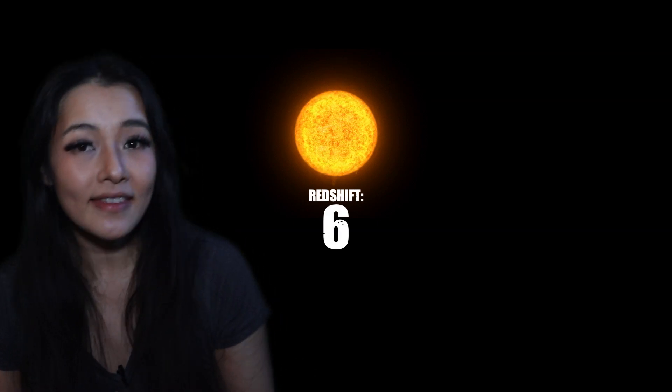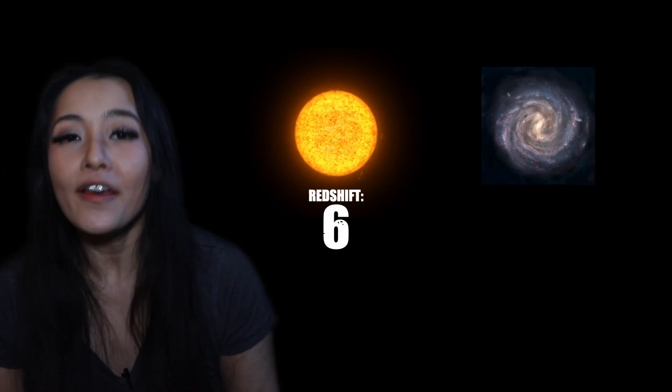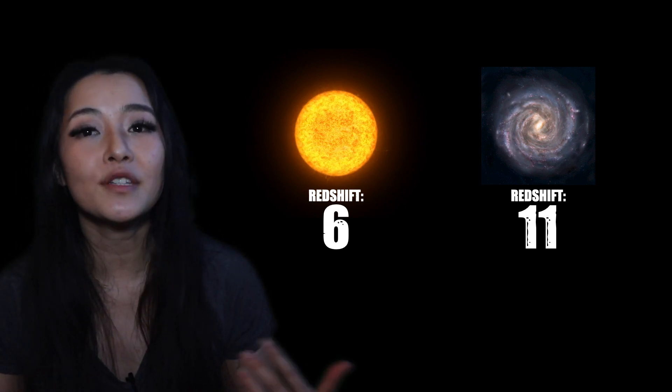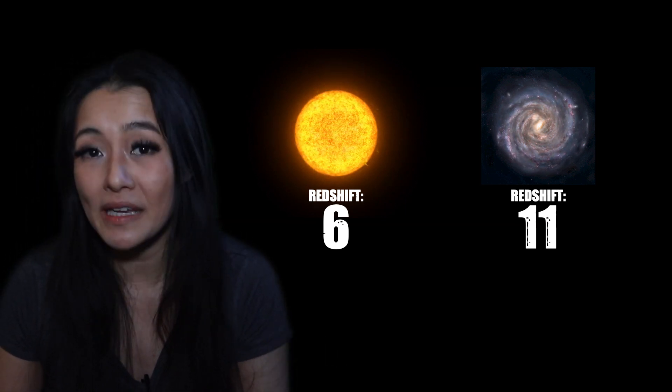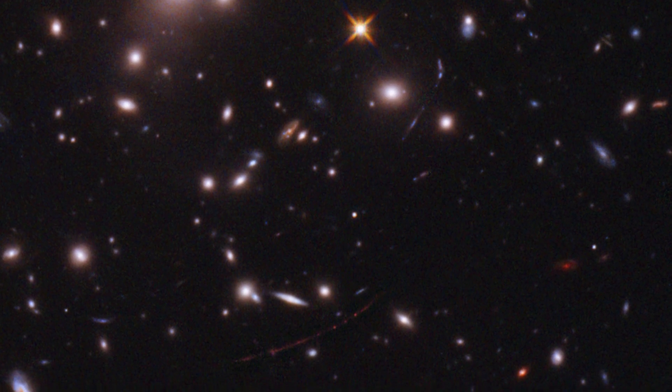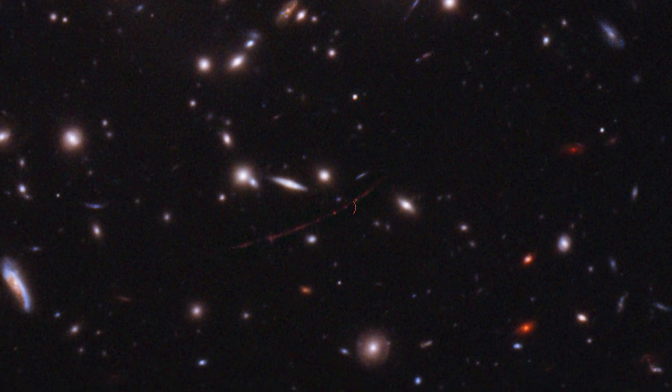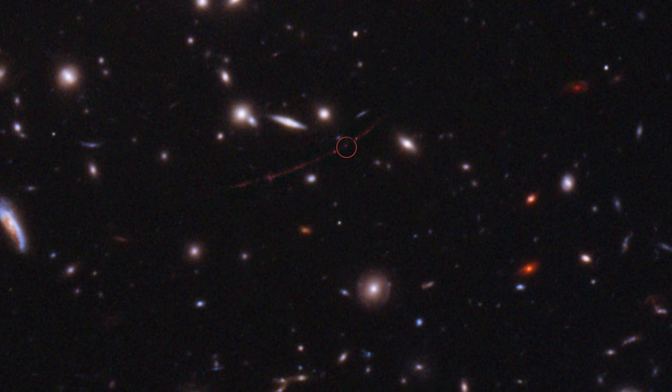So, like I said, Earendel is at a redshift of 6. But this isn't the farthest away thing that we've ever seen. The farthest galaxy observed is at a redshift of 11. That's equivalent to a distance of 32 billion light years away currently. However, this is potentially the farthest away resolved star to have been observed, and that's pretty impressive because it's not even that bright.